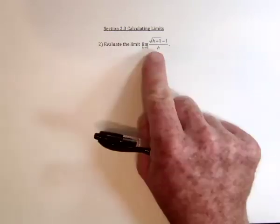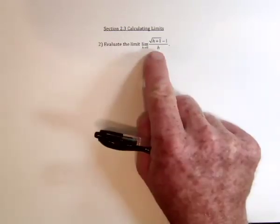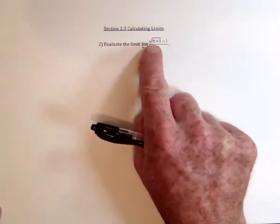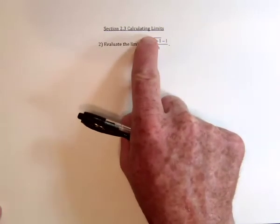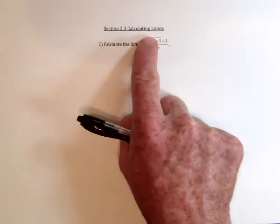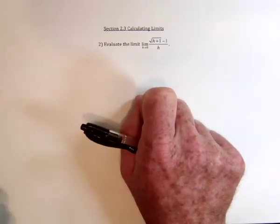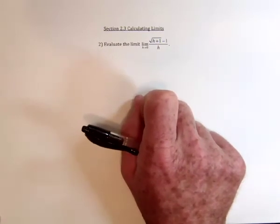This is yet another one we can see that if you substitute zero, we'll have division by zero. And in fact, in the top, if you have h as zero, then this is just going to be 1 minus 1. So we've got zero divided by zero, indeterminate form, which is an indication we need to do algebra.